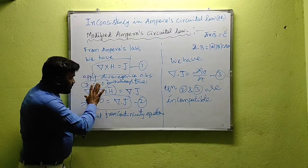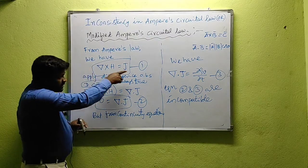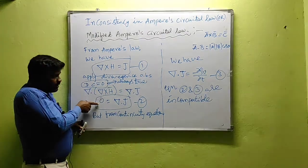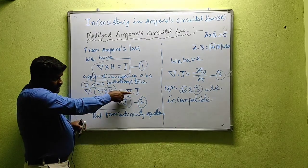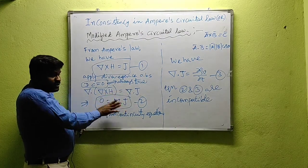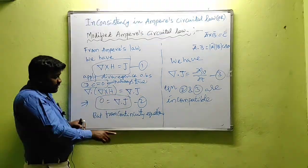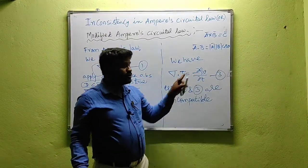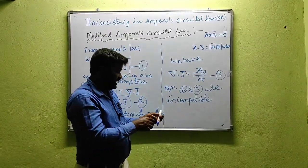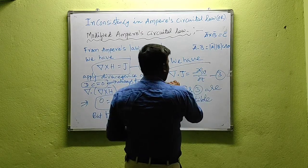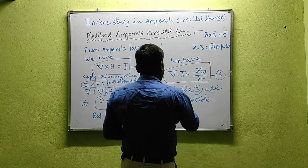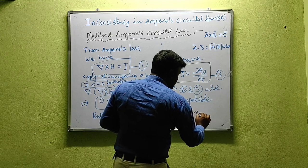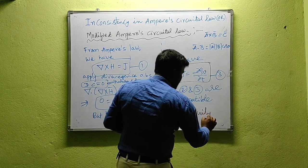Basically, if I apply divergence on both sides, I will get divergence of curl of any vector as 0. But on the right hand side, I have del dot J, which equals minus ∂ρv/∂t — that is nothing but the continuity equation.